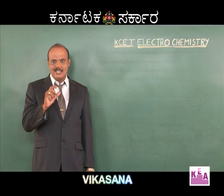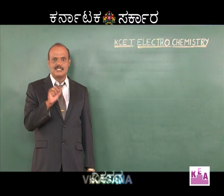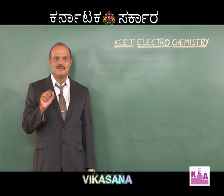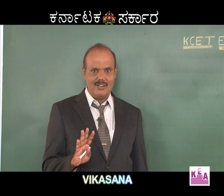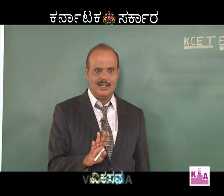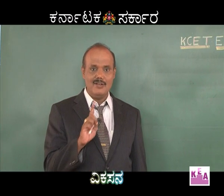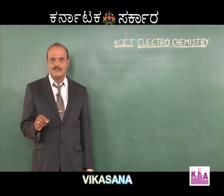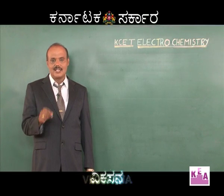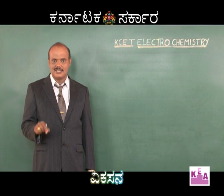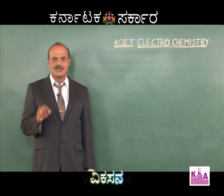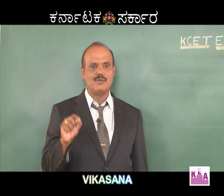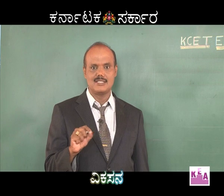A device is required to convert electrical energy into chemical energy or chemical energy into electrical energy. Those devices are named as electrochemical cells. There are two types of electrochemical cells: one is the galvanic cell, another is the electrolytic cell. Galvanic cell is a device from which electricity can be produced from chemical reactions. Electrolytic cell is a device in which electrical energy is converted into chemical energy. We can also take the applications of galvanic cells — they are called batteries and fuel cells.